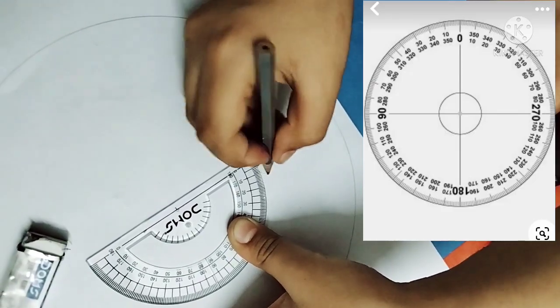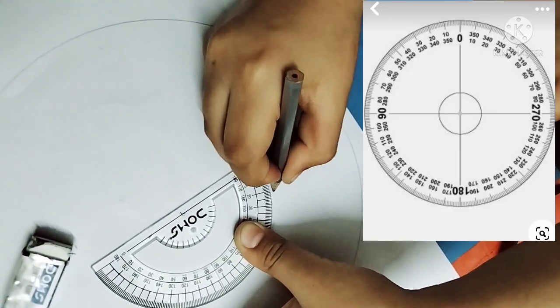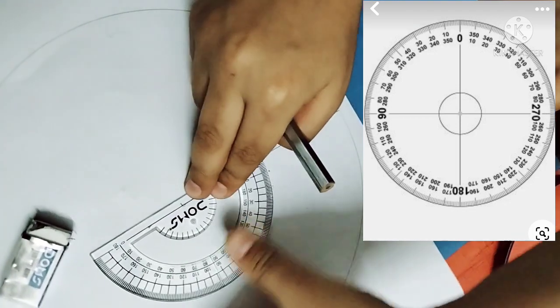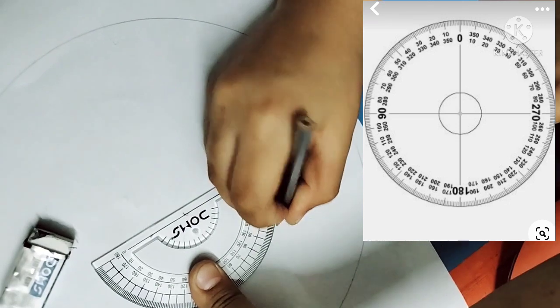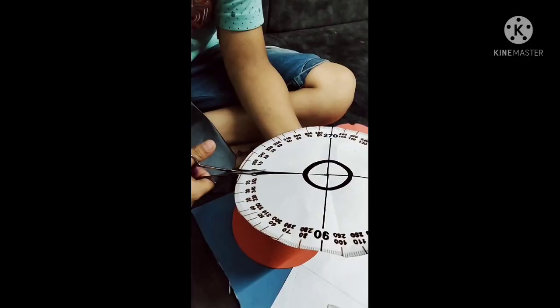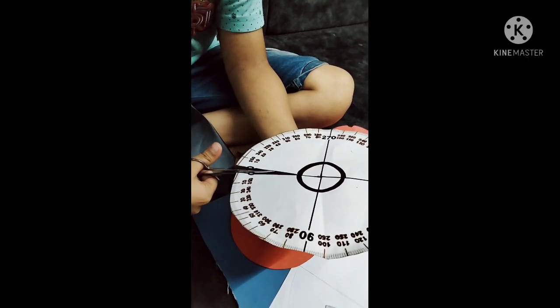Mark all angles with the help of D and cut the radius at 0 degrees.